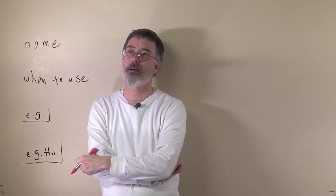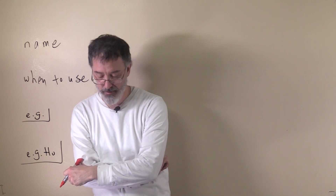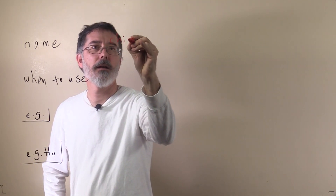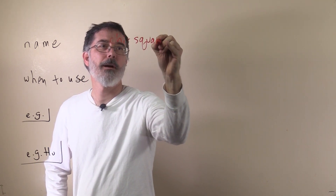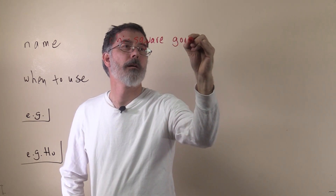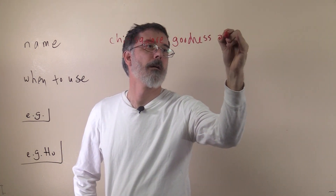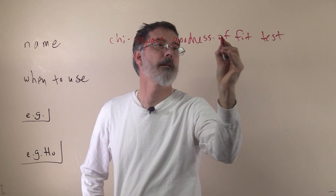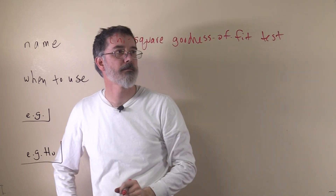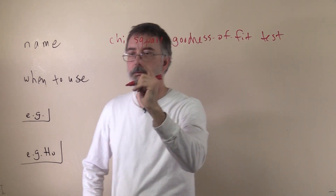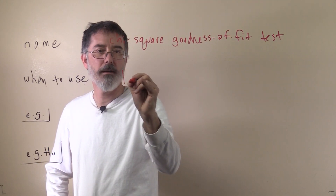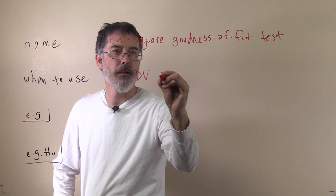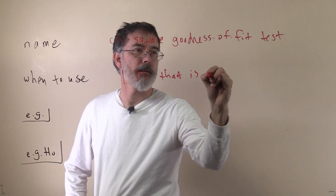I am going to talk about one last test for this class. It is the chi-square goodness of fit test. You can make that a compound adjective if you like. And you use this when you have one dependent variable that is nominal.